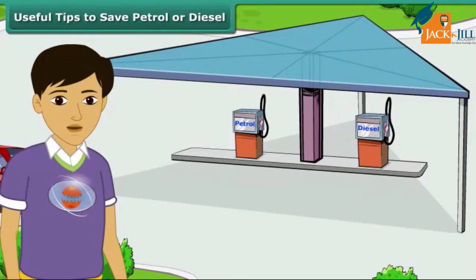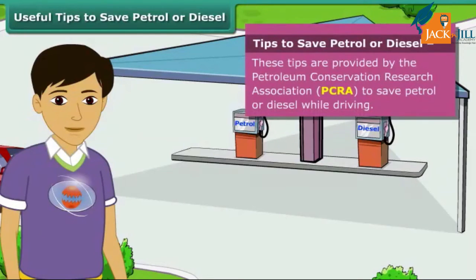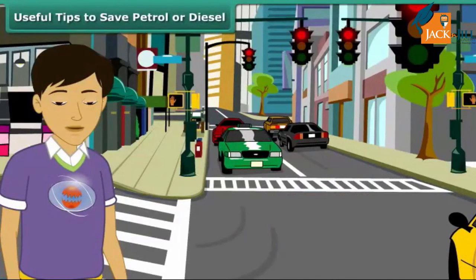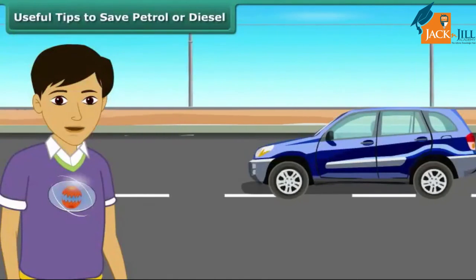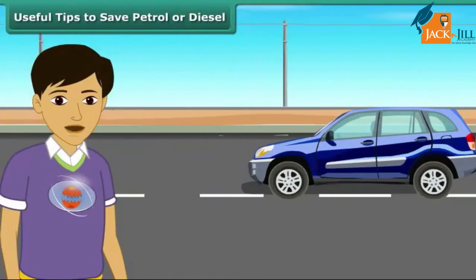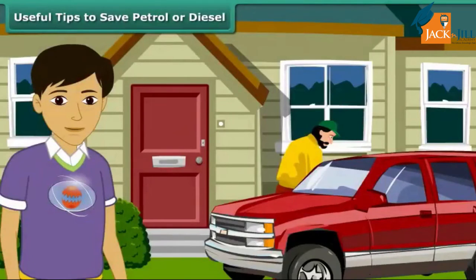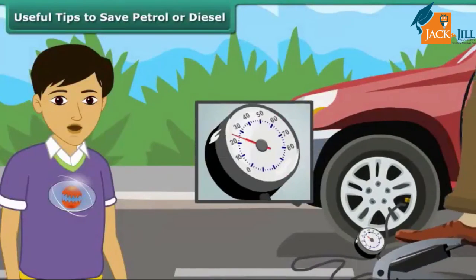Petrol and diesel are exhaustible resources, meaning the amount in nature is limited and will deplete one day. It is important to use these resources carefully. Here are a few useful tips as advised by the Petroleum Conservation Research Association, PCRA: switch off the engine at traffic lights or traffic jams; drive at a constant and moderate speed as far as possible; and ensure regular maintenance of the vehicle and correct air pressure in tires.